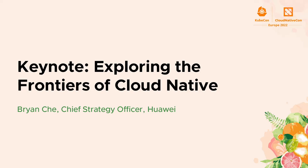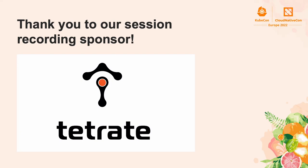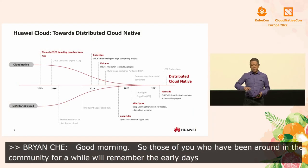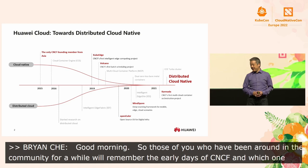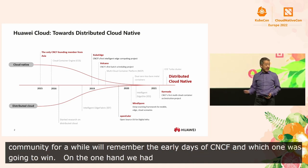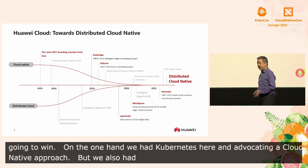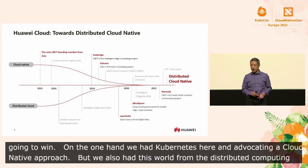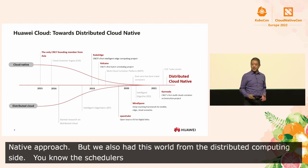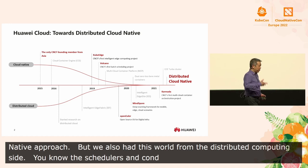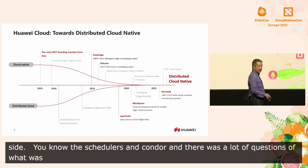Good morning. Those of you who've been around the community for a while will remember the early days of CNCF and there was a lot of discussion around what was the right scheduling approach and which scheduler was going to overall win. On the one hand, of course, we had Kubernetes here with CNCF advocating a very strong cloud native approach. But we also had this world coming from the distributed computing side. Some of you remember a lot of the HPC schedulers — people were using things like LSF or Condor, Grid Engine, Mesos. And there was a lot of discussion around what was the scheduler that was going to arise and take over this overall architecture as we moved towards the cloud.